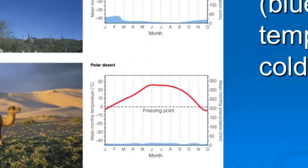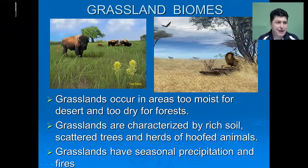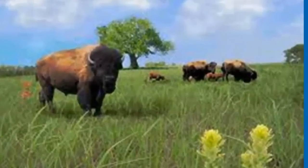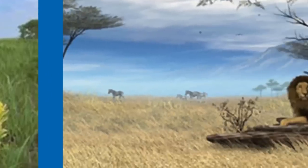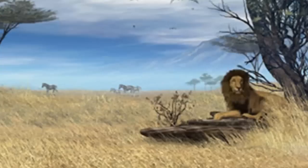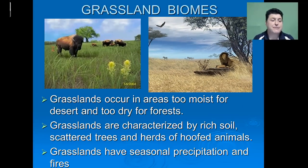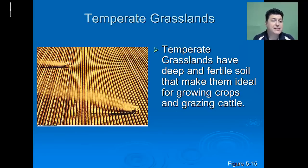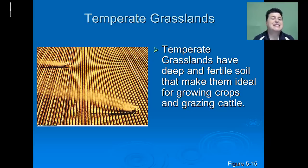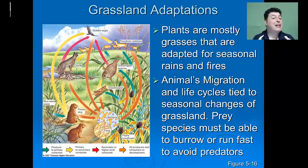The next biome we'll explore is the grassland biome. Grasslands occur in areas that are too moist for deserts and too dry for forests. Grasslands will be characterized by rich soil, scattered trees, and herds of hoofed animals. Grasslands typically will have seasonal precipitation and fires. One of the major characteristics of the temperate grasslands is that they often have deep and fertile soil, which makes them ideal for growing crops and grazing cattle. The fertile soil comes from the fact that when grasses die, that organic material gets added to the soil, adding to its richness.